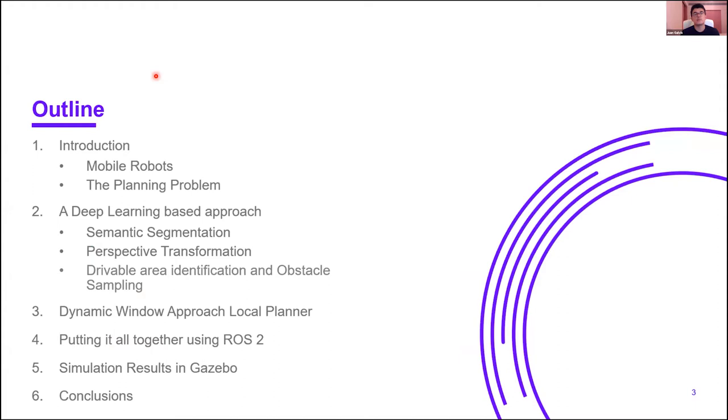Today's presentation is organized as follows. First I will do a brief introduction about mobile robots, then I will present the formulation of the planning problem, which is important to understand the proposed deep learning approach for navigation. Then I will explain the planning algorithm, which is the Dynamic Window Approach, and then how everything was implemented using ROS2, and finally some simulation results in Gazebo and conclusions.